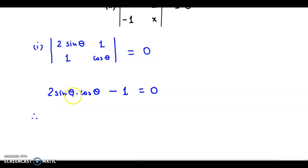So therefore now we know that 2sinθ·cosθ is nothing but sine of 2θ, and we transfer this minus 1 on the other side. So we have sin2θ is equal to 1.